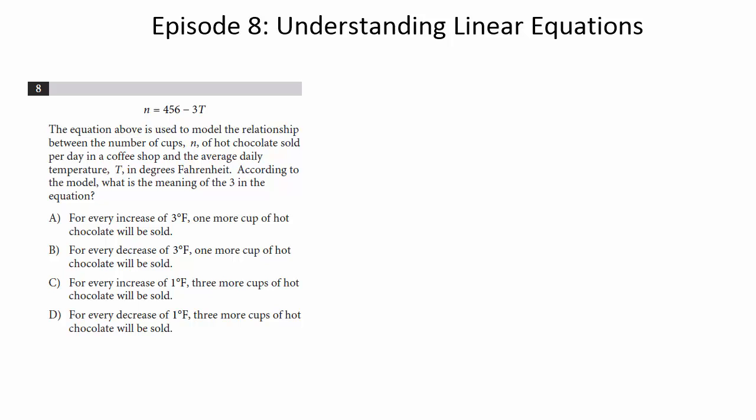So let's walk through what's going on in this equation, and hopefully it'll help you apply to other questions like this. The equation above is used to model the relationship between the number of cups n of hot chocolate sold per day in a coffee shop and the average daily temperature T in degrees Fahrenheit. According to the model, what is the meaning of the three in the equation?